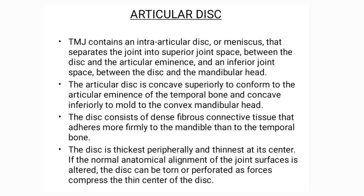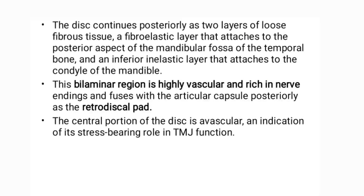The disc is thickest peripherally and thinnest at the center. If the normal anatomical alignment of the joint surface is altered, the disc can be torn or perforated as forces compress the thin center of the disc. The disc continues posteriorly as two layers of loose fibrous tissue: a fibroelastic layer that attaches to the posterior aspect of the mandibular fossa of the temporal bone, and an inferior inelastic layer that attaches to the condyle of the mandible. This bilaminar region is highly vascular and rich in nerve endings, and fuses with the articular capsule posteriorly as the retrodiscal pad. The central portion of the disc is avascular, an indication of its stress-bearing role in TMJ function.